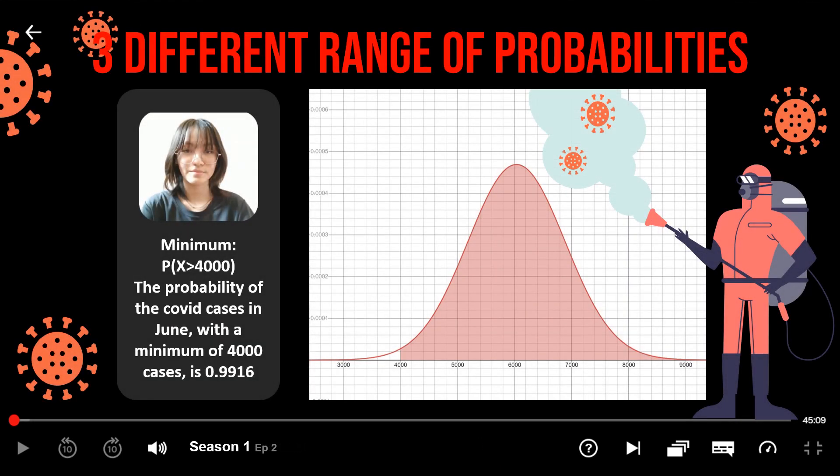So, there are three different ranges of probability. Firstly, the probability of COVID cases in June with a minimum of 4,000 cases is 0.9916.